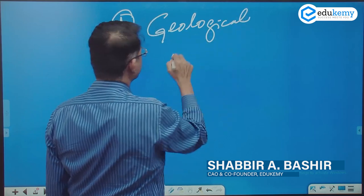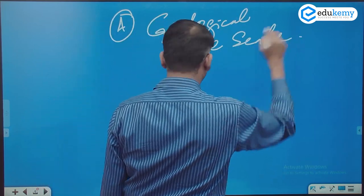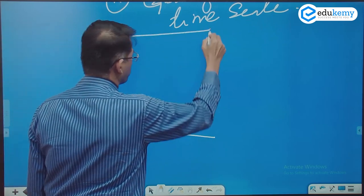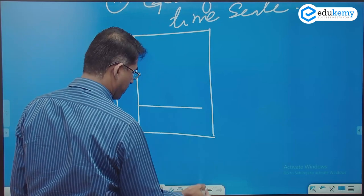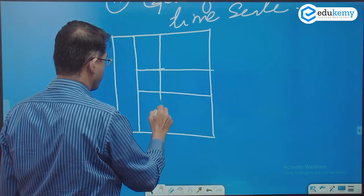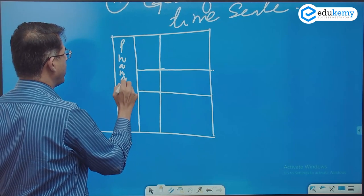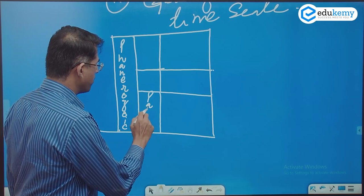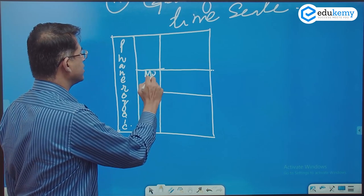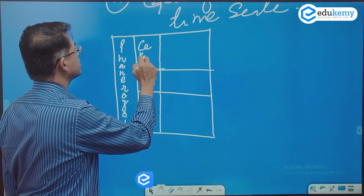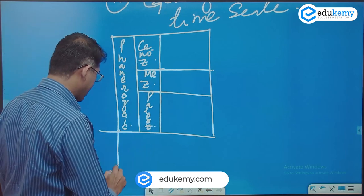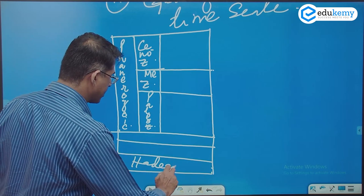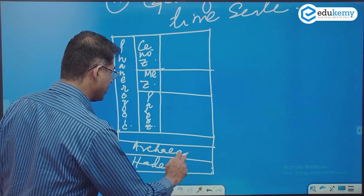The geological time scale — I presume you all know this, I'm quickly recalling it for you. This is Phanerozoic, this is Paleozoic, this is Mesozoic, this is Cenozoic. Here we have Proterozoic, Archean, and Hadean times.